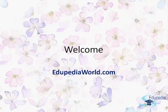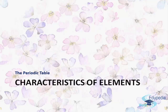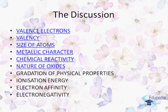Hello friends and welcome to AutopediaWorld.com, your destination for online education. Let's start today with the continuing session on the characteristics of elements, where in past sessions we have already discussed the variation of properties like valence electrons, valence, size of atoms, metallic character, and chemical reactivity. In this discussion today we shall learn about the nature of oxides and their variation in the periodic table with respect to groups and periods.